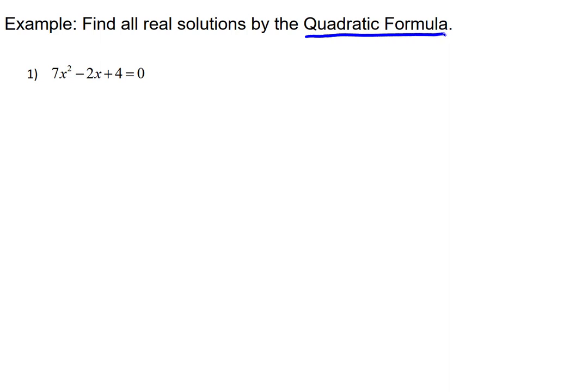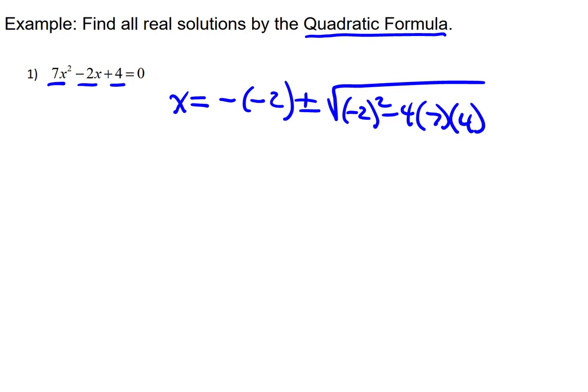or x should equal -b. Now that's actually -(-2), since b is already negative. -b ± √(b² - 4ac). And that's all over 2a.